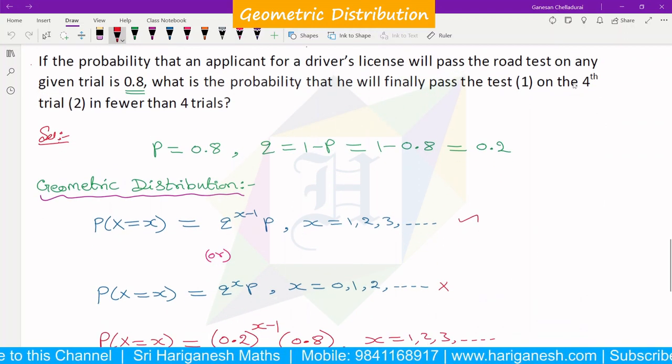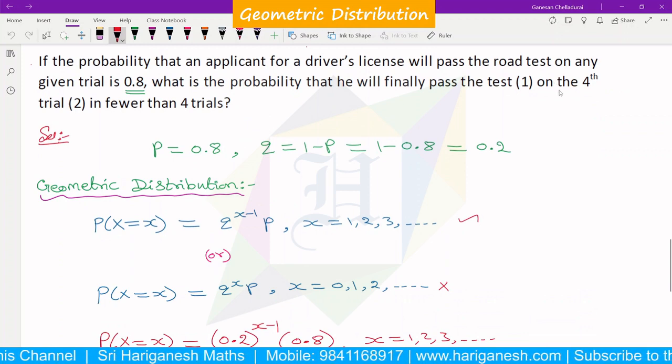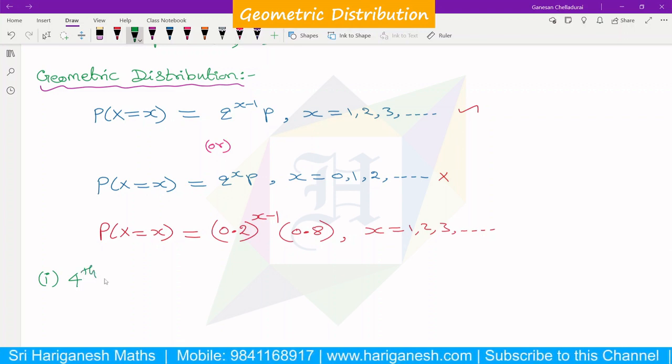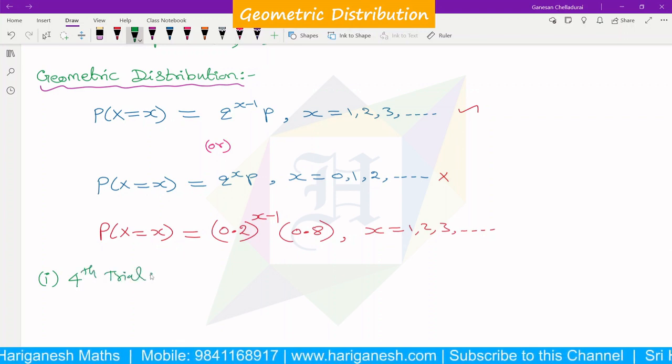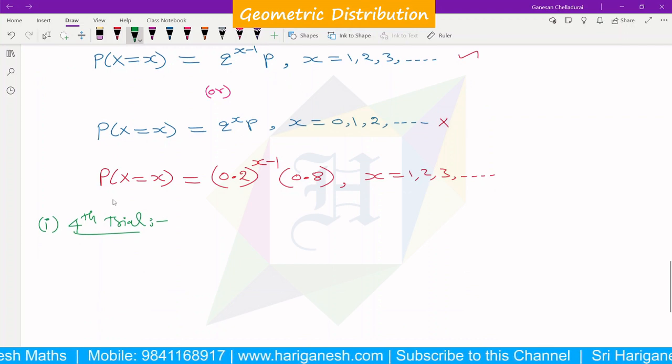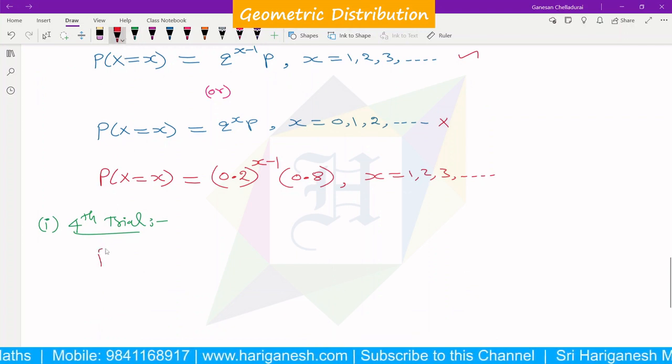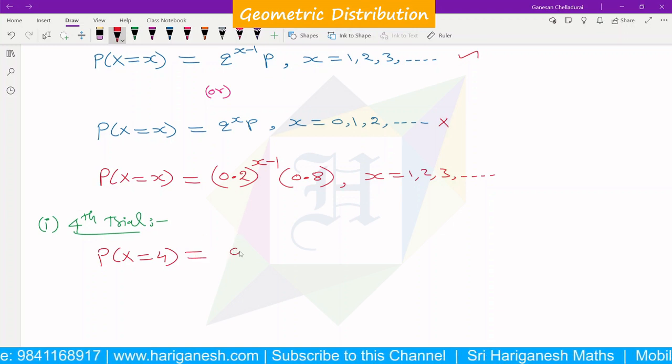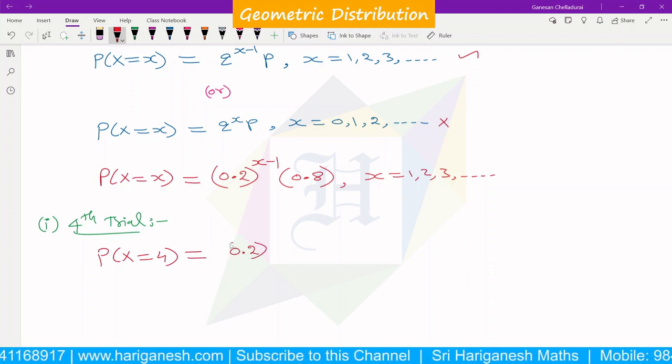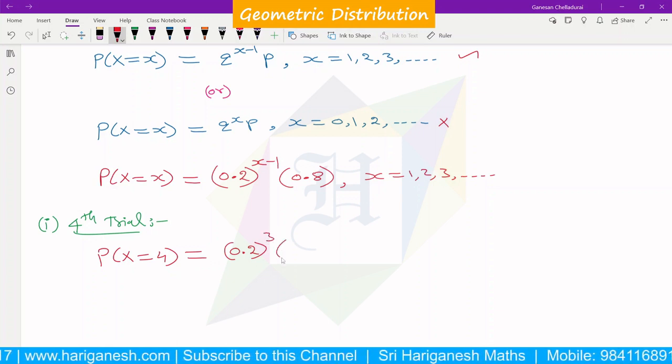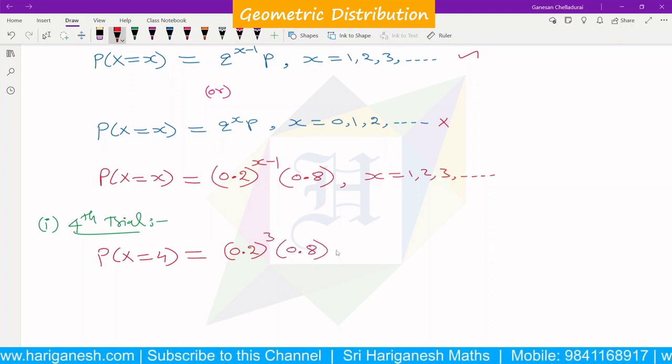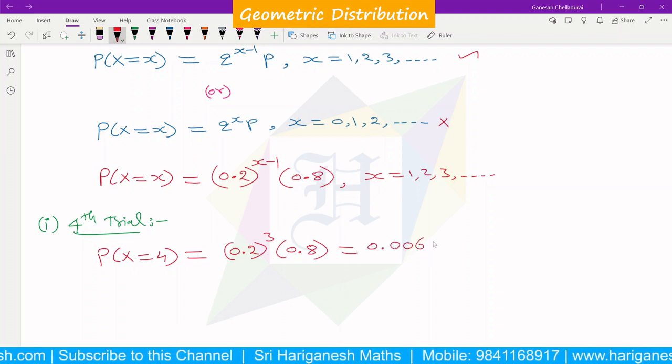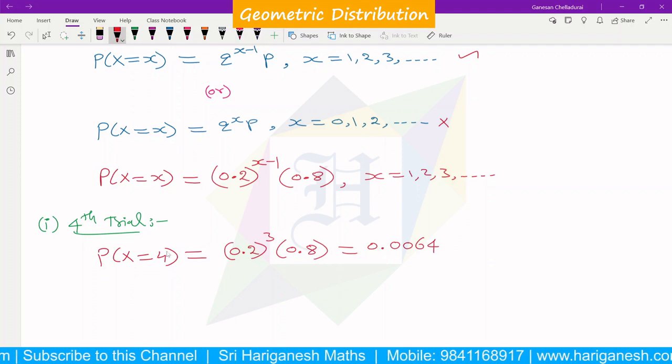For the first question, we have to find the fourth trial. I want to find P(x=4). So, x equals 4. This gives us 0.2 to the power 4 minus 1, which is 3, times 0.8. If you solve this on a scientific calculator, you get 0.0064. So, this is the answer.